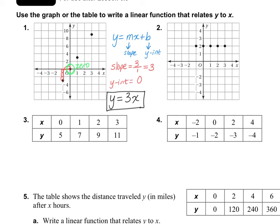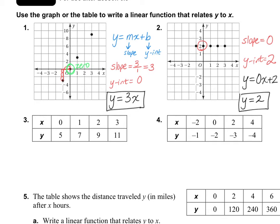Let's take a look at number 2. Y equals MX plus B, so we need to find our slope and our Y-intercept. I notice that I cannot draw a triangle connecting these points, which means the slope is either going to be 0 or undefined. Remember slope dude — he's having 0 fun if he's doing this — so that means this has a slope of 0. The Y-intercept is at positive 2. So we write Y equals 0X plus 2, which simplifies to just Y equals 2. That's the answer for number 2.